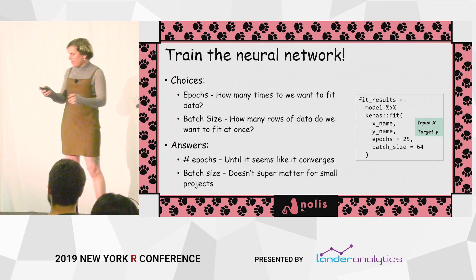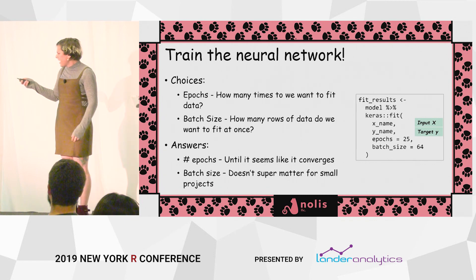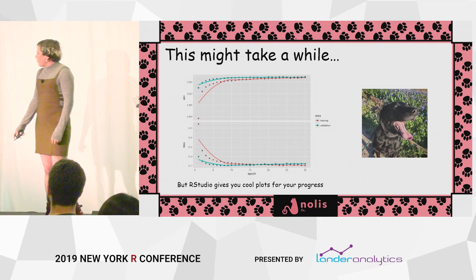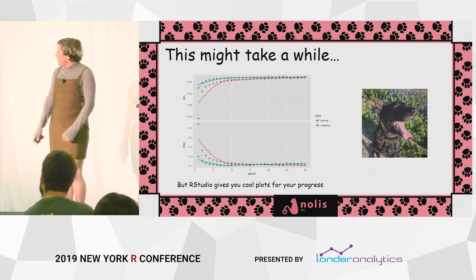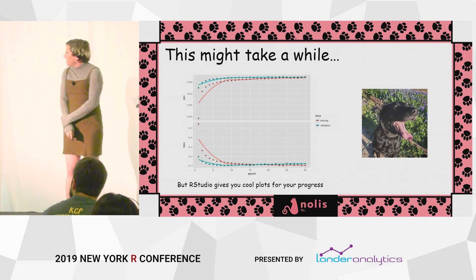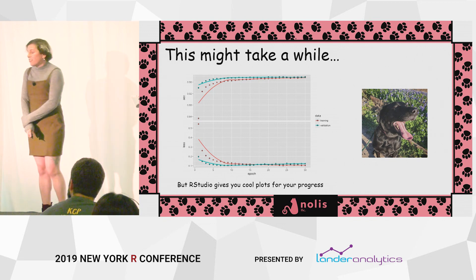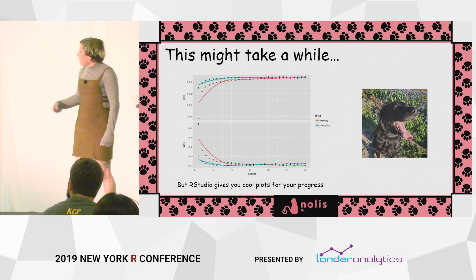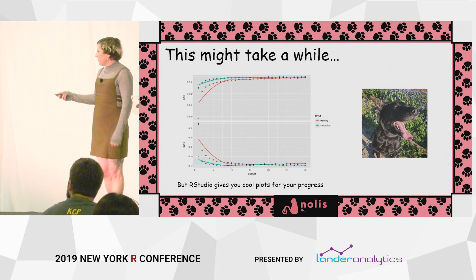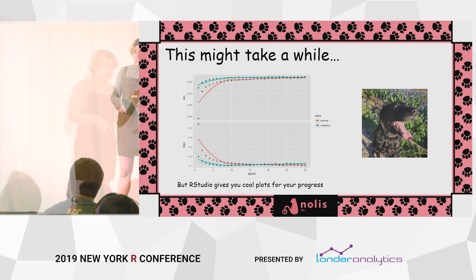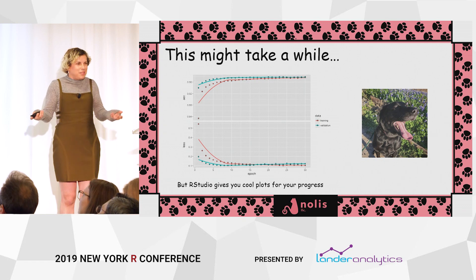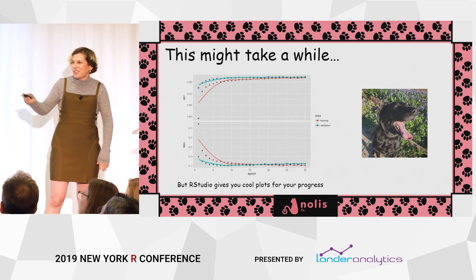Training might take a while. RStudio gives you a nice output showing accuracy increasing over time and loss decreasing. You get two color lines because you can split between training and test data, but for pet names it doesn't really matter — whatever you do is fine.